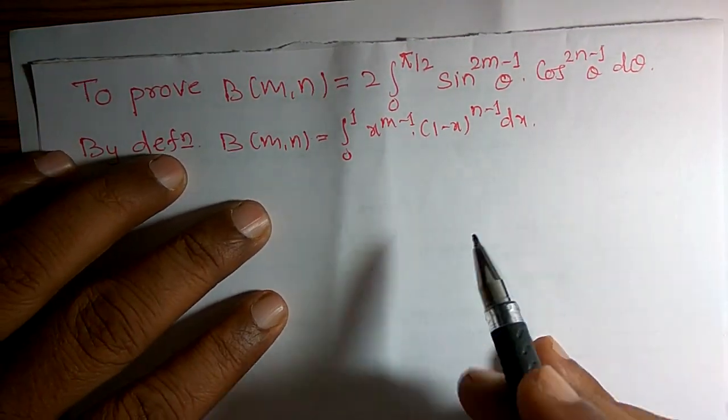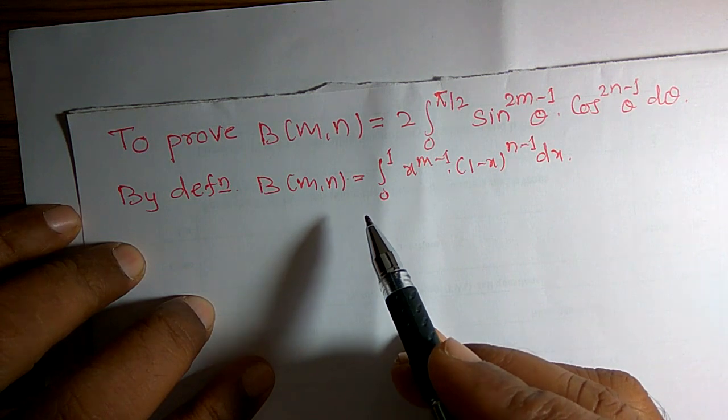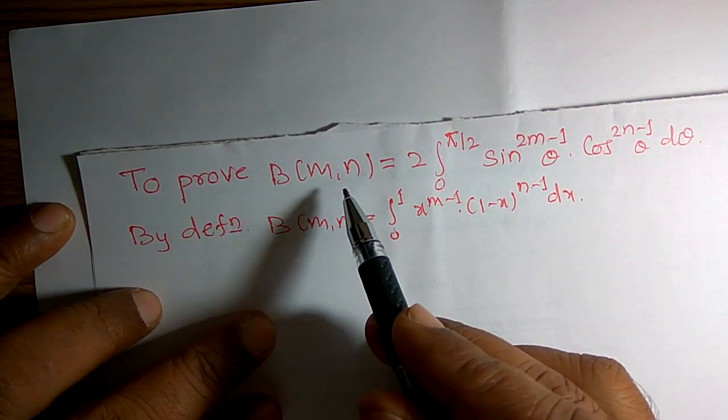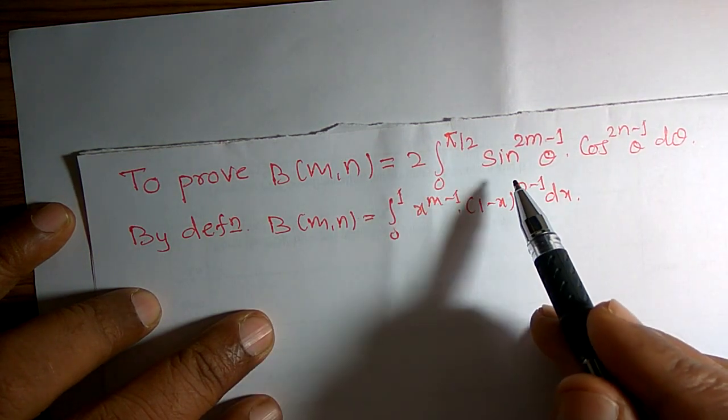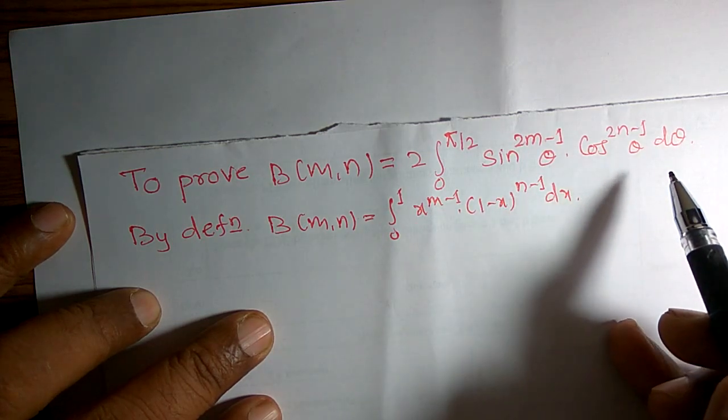Friends, in this video I am going to discuss the properties of beta functions. I want to prove that beta of m comma n is equal to 2 times the integral from 0 to pi by 2 of sin raised to 2m minus 1 theta cos raised to 2n minus 1 theta d theta.